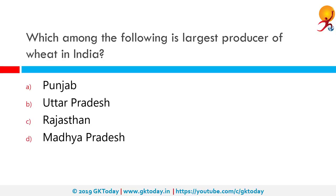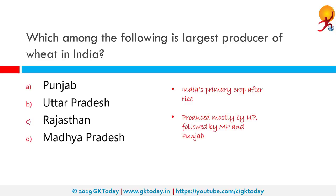Which among the following is the largest producer of wheat in India? Wheat is India's primary staple harvest, placed second only to rice, and mostly consumed in the north and northwest. Uttar Pradesh is the topmost contributor of wheat with a total production of 25.22 million tons, followed by Punjab and Madhya Pradesh. The correct answer is Uttar Pradesh.